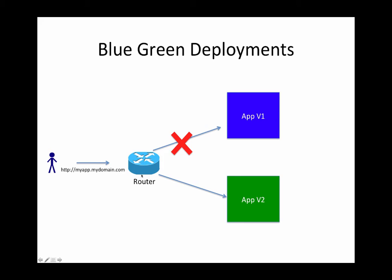The end user doesn't see any downtime — they just see a sudden switchover of traffic being routed to application version two. Now let's say you switched over and figured out there is some issue and you have to roll back. That's also very simple: just disconnect the green version and switch back to blue. So you have two similar instances of your production application — one blue and one green — and you can switch between them whenever you want.